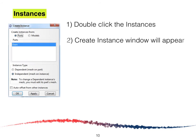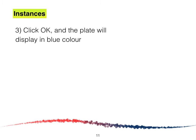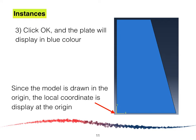Double-click on Instances and the Instance window will appear. In this part, we are going to select Independent rather than Dependent. This is because the pressure we are applying is non-uniform. Click OK and the dam will display on your screen. Since the model is drawn at the origin, the local coordinate is displayed at the origin, because we fixed our lower left endpoint and drew from the origin.